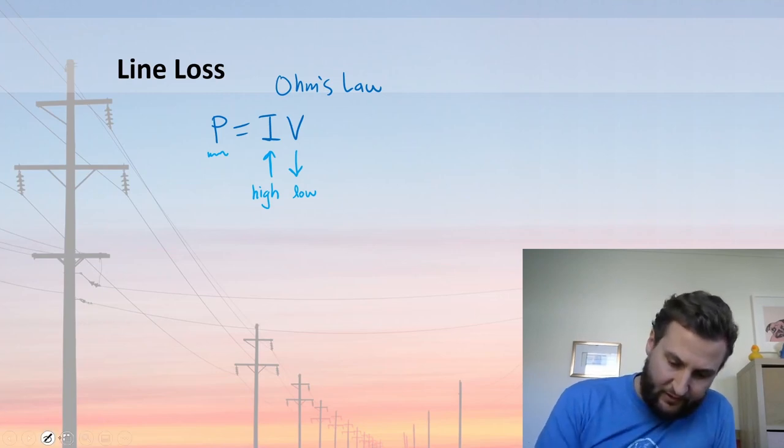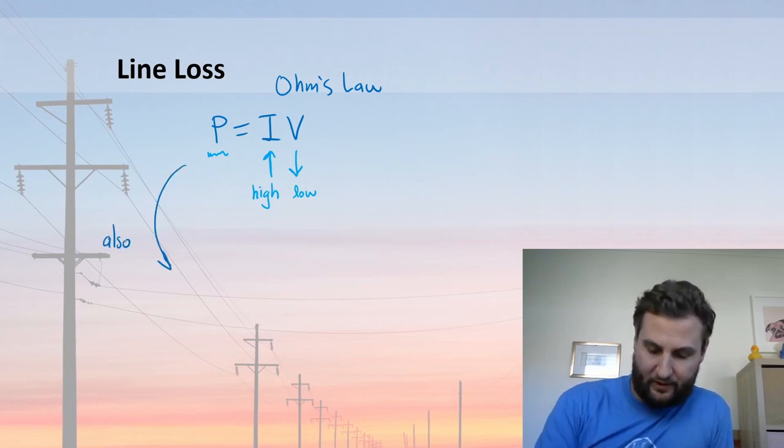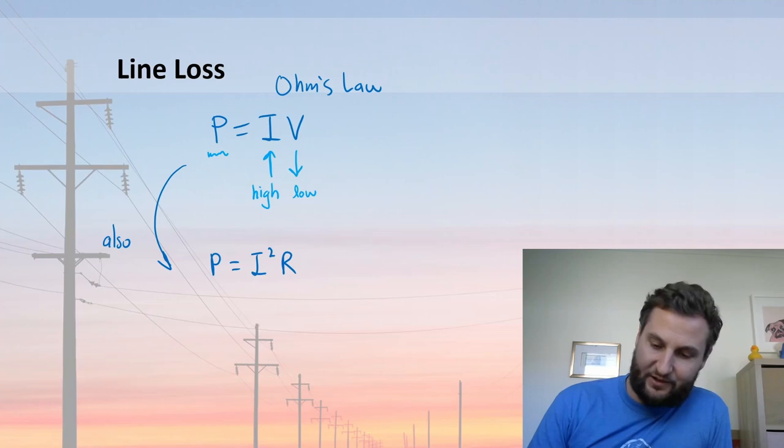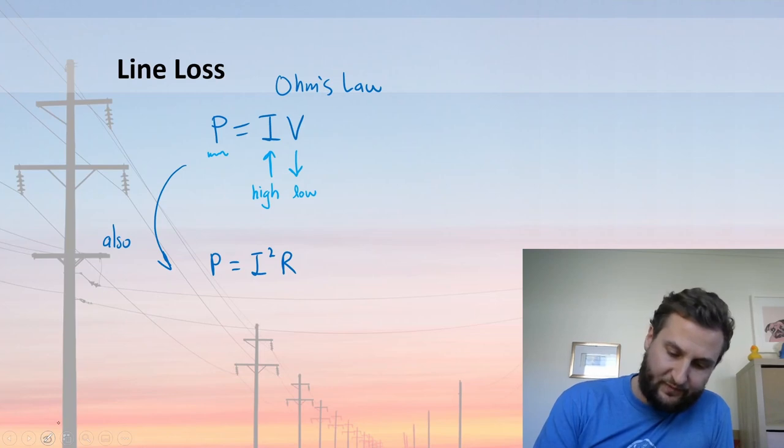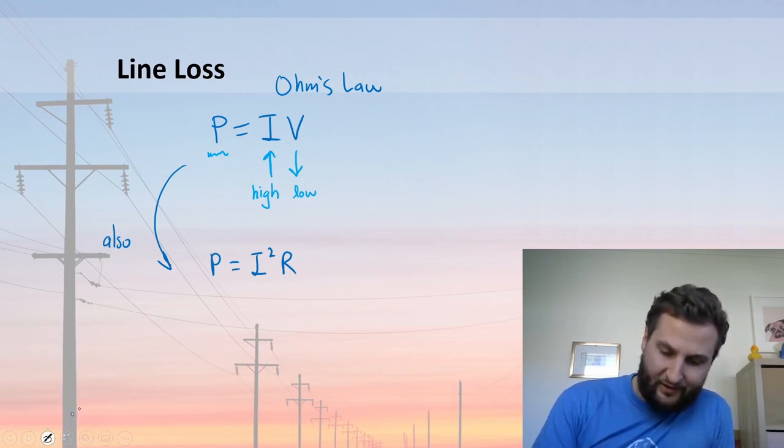So what other equation do we know of? We also know that power equals I squared times R. So power going through a conductor like a high voltage transmission line is going to have some sort of natural resistance built into it, as everything does. So these are variables we can play with here: I squared and R.